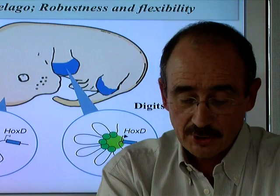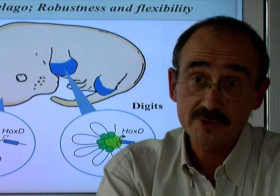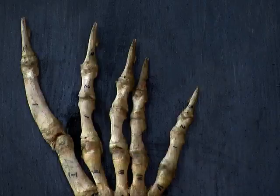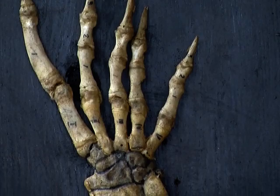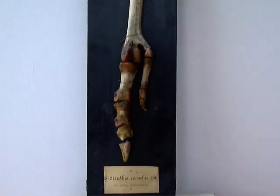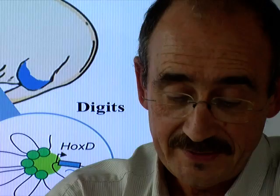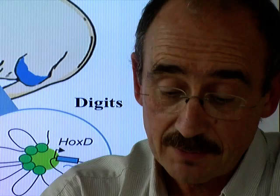Such a complex regulatory strategy helps to explain how hands and feet can be so different amongst various tetrapods, as it may be quite easy to modulate the outcome of the system. But at the same time, it makes it very robust, since small changes in the gene desert will only have moderate effects upon the final forms.